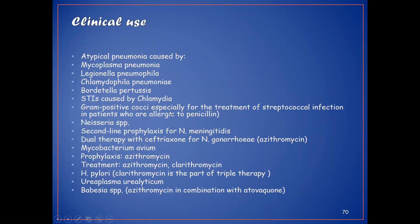Clinical use: macrolides can work against atypical pneumonia caused by Mycoplasma pneumoniae, Legionella pneumophila, and Chlamydophila pneumoniae. They are also used for STIs caused by Chlamydia and for gram-positive cocci, especially for the treatment of streptococcal infection in patients who are allergic to penicillin.